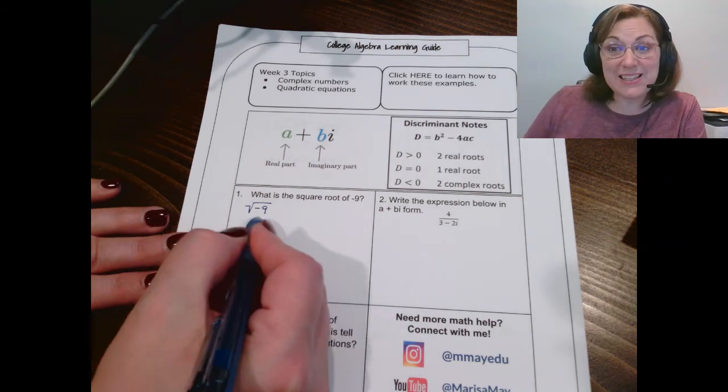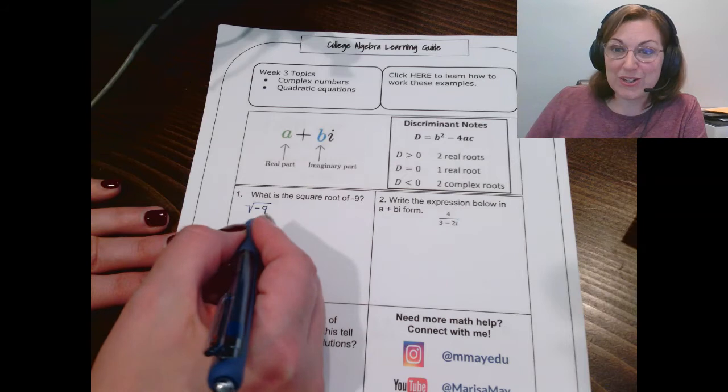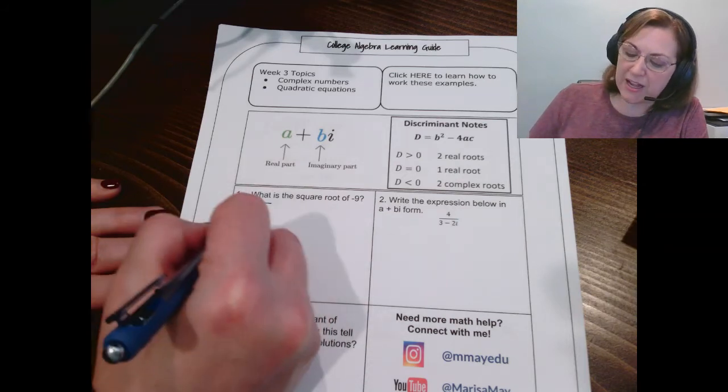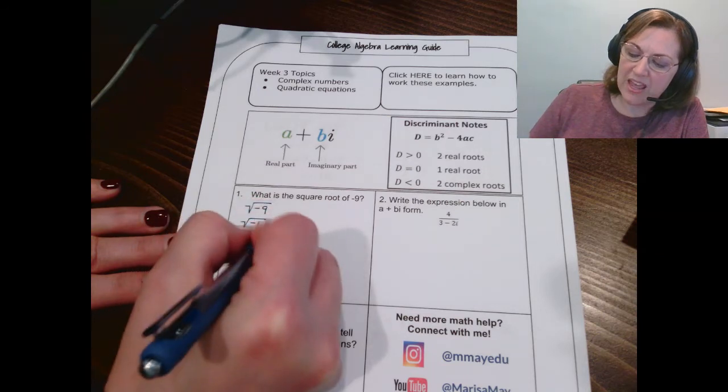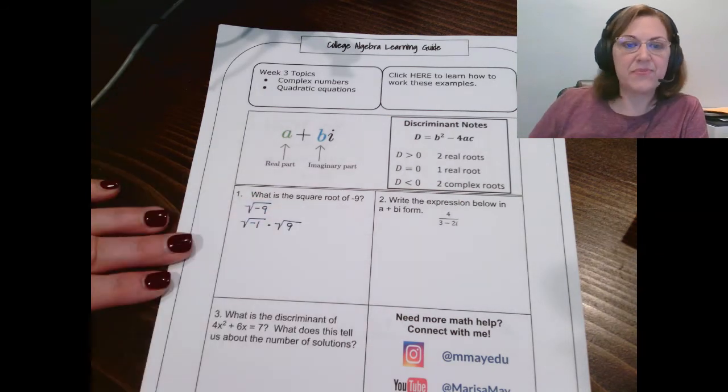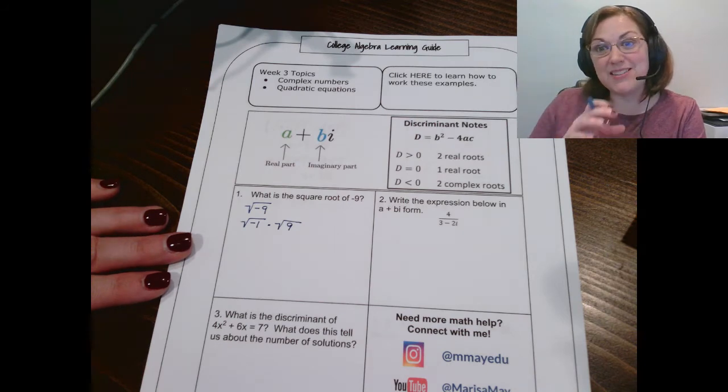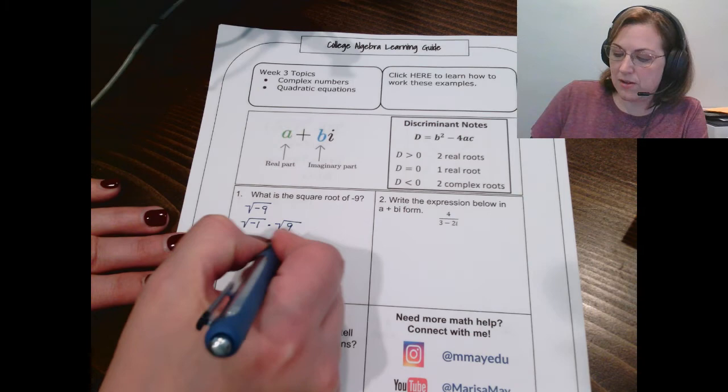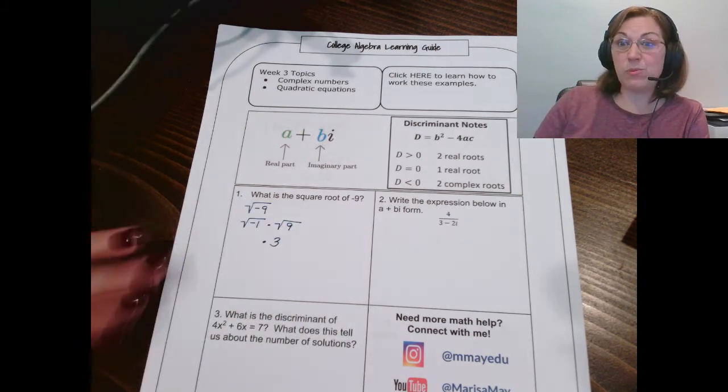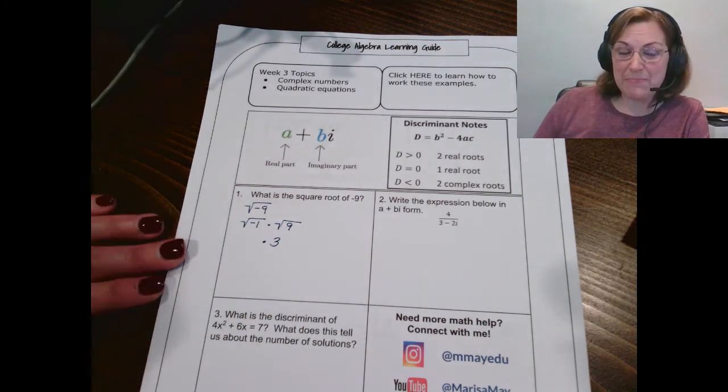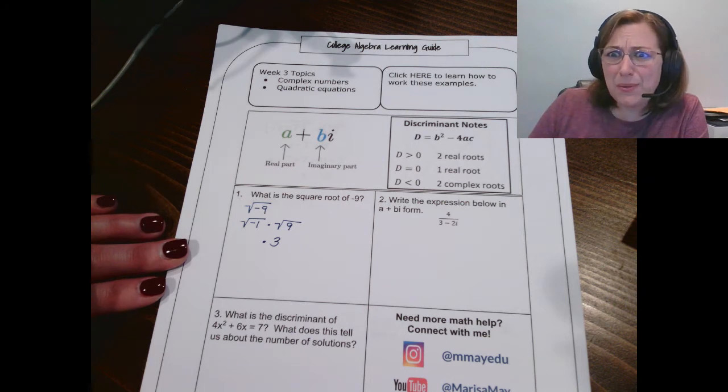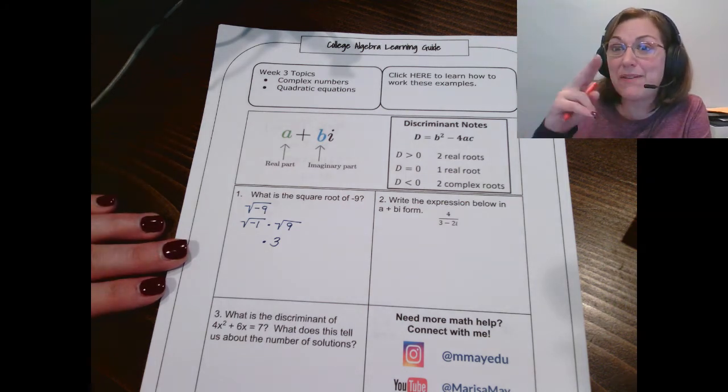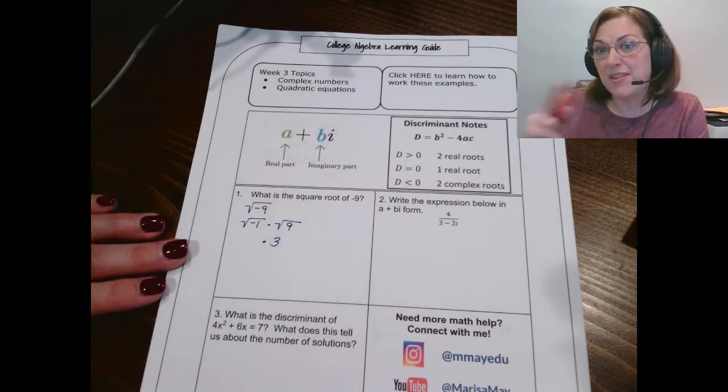But at this point in the course, we're ready to start talking about what are called imaginary numbers. I'm going to split this up into the square root of negative 1 and the square root of 9. I do that because square root of 9 is very familiar to you. But this square root of negative 1, we got problems with. How do you have a number multiplied by itself that will give you negative 1?